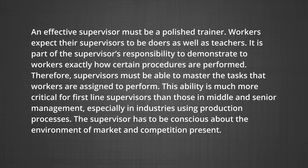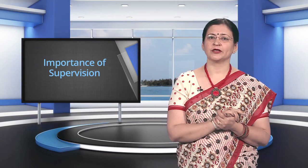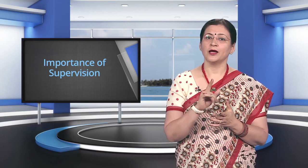Supervisors must be able to master the task that workers are assigned to perform. This ability is much more critical for first line supervisors than those in middle and senior management, especially in industries using production processes. The supervisor has to be conscious about the environment of market and competition present. Therefore, he can innovate the techniques of production and try his best to keep on changing and improving the physical environment around the workers. He can also shift the workers into fresh schedules whenever possible. This will result in higher productivity, satisfying working conditions, improving human relations, higher profits, higher stability, and also high morale of workers.